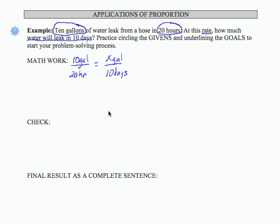Now I have to be very careful with my proportion because my units are not the same. Here I have a gallons per hour rate. Here I have a gallons per days rate. I need to be sure that my rates are in terms of the same units before I proceed to try and solve my proportion. So I'm going to rewrite this as 10 gallons over 20 hours equals x gallons, and let's see how many hours.